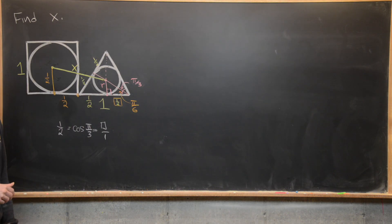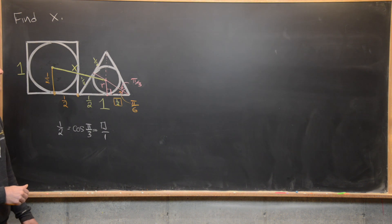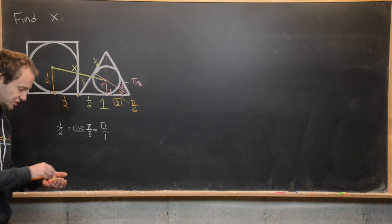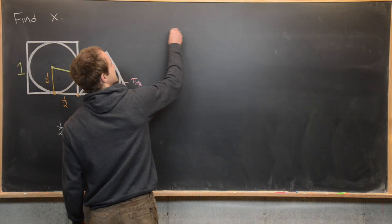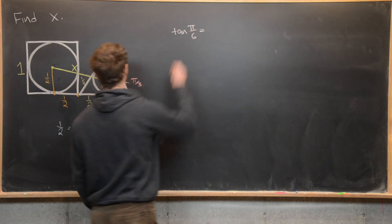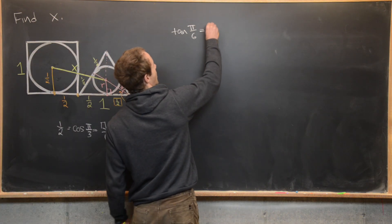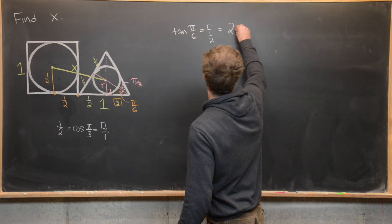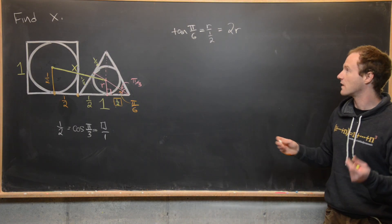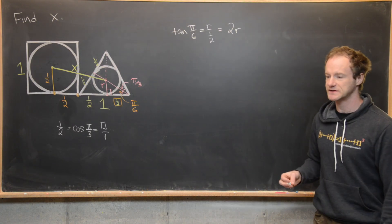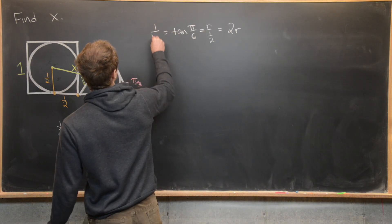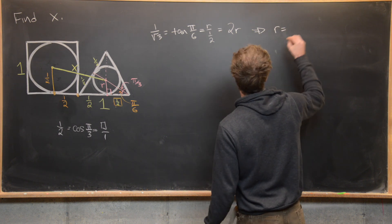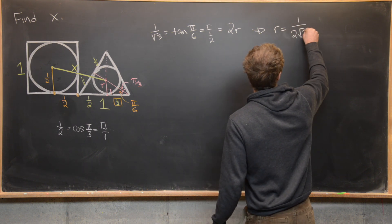Naming the inradius r, we use the tangent function. In the smaller right triangle, tan(π/6) equals opposite over adjacent, which is r over 1/2, or 2r. Since tan(π/6) = 1/√3, we get 1/√3 = 2r, so r = 1/(2√3). That's the radius of the circle inscribed in the equilateral triangle.